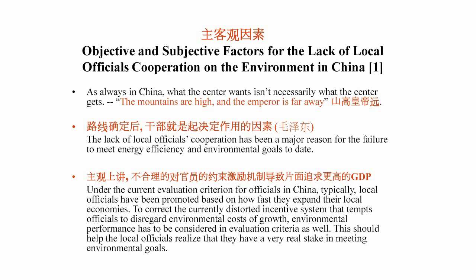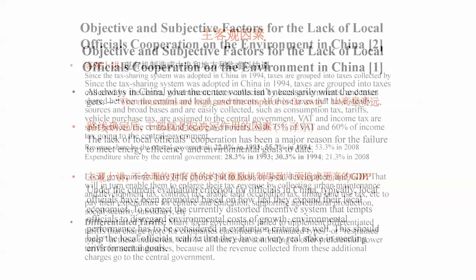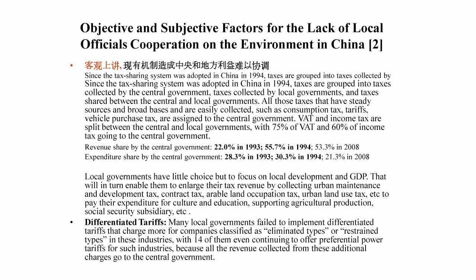Regarding the relationship between central and local government: over the last 30 years, economic reform has devolved decision-making to local government. How local government acts is crucial to meeting any goal the central government sets. The evaluation criteria for local officials focuses on GDP — if you drive your local GDP high, you get a better chance of promotion. The government certainly has to change this kind of criteria, and they are doing so, but it probably takes time.